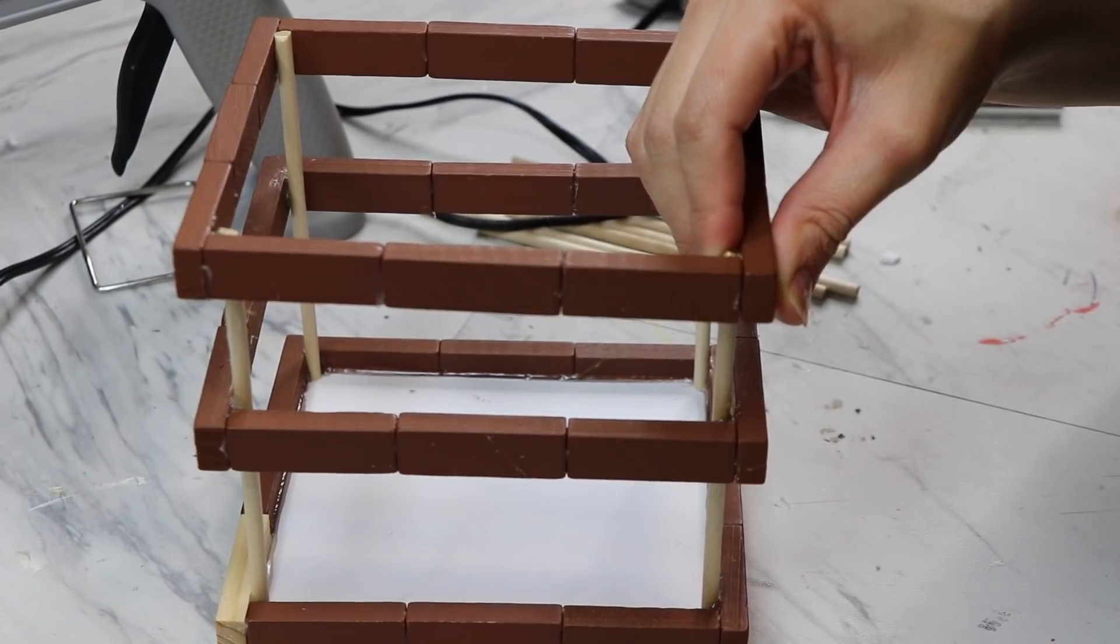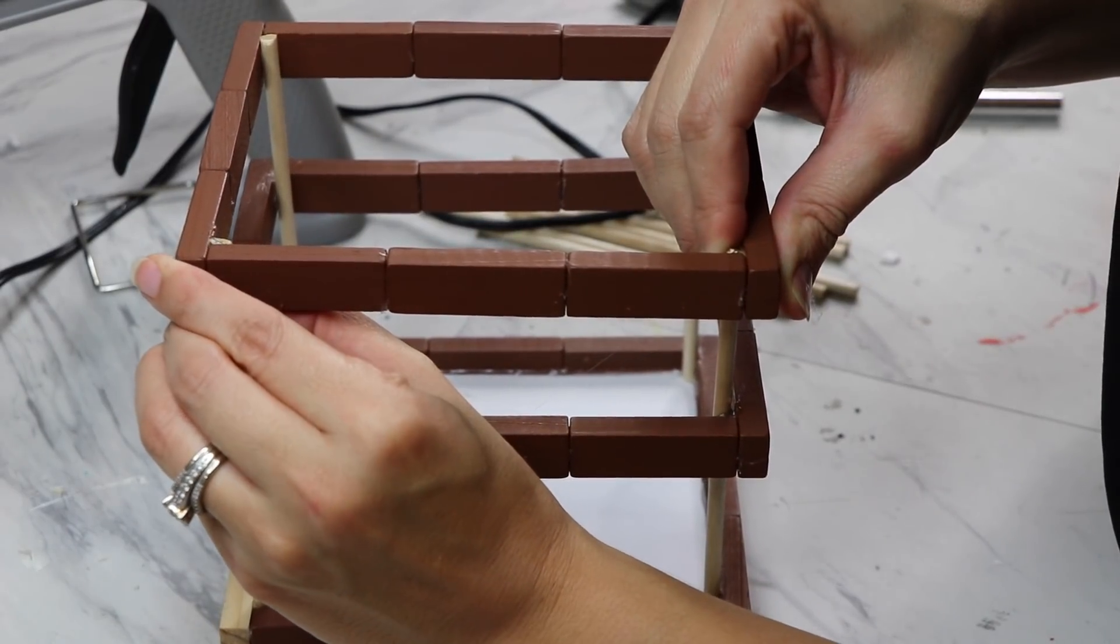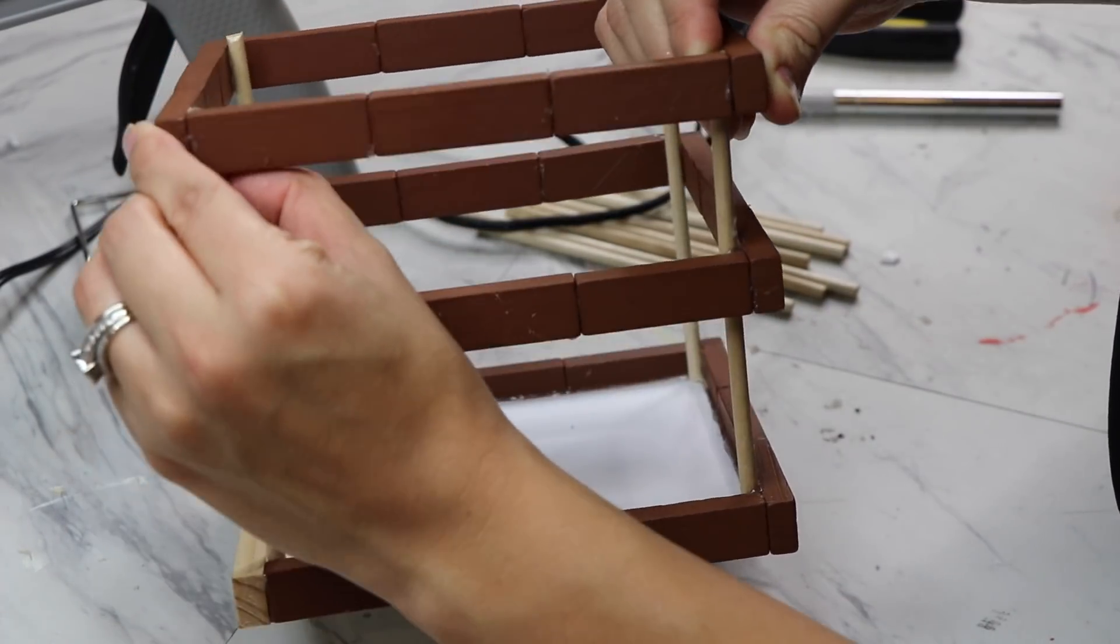Once you figure it out, you can go ahead and trim your dowels and then add the last frame on there and just hot glue it together.